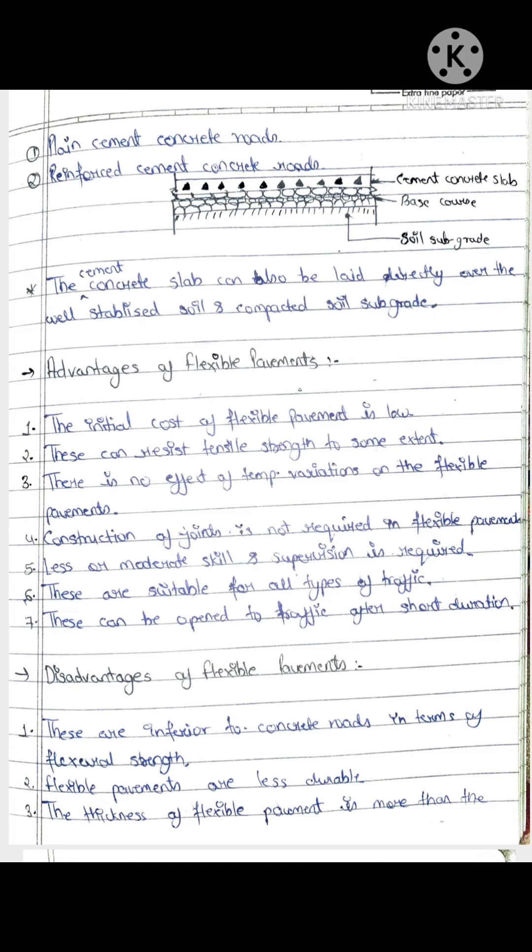Compared to rigid pavement, the advantages of flexible pavement: the initial cost of flexible pavement is low. They can resist tensile strength to some extent. There is no effect of temperature variation. The construction of joint is not required in flexible pavement.